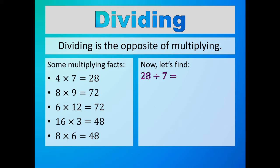So we need the product to be 28 and one of the numbers being multiplied to be 7. And here we find that in the first equation — here is the product of 28 and the number being multiplied of 7. The only other number being multiplied is 4. So 28 divided by 7 is equal to 4. Let's now find 48 divided by 16.